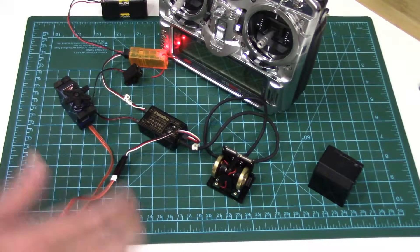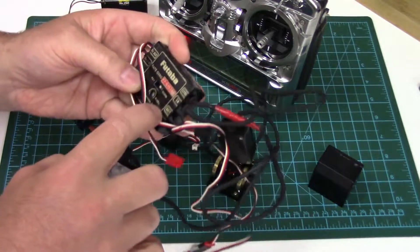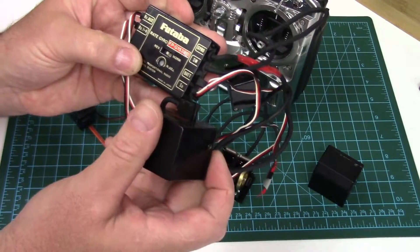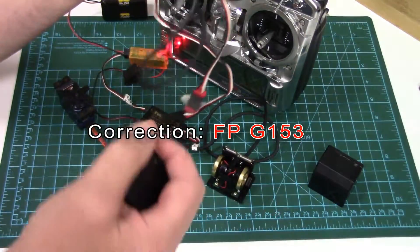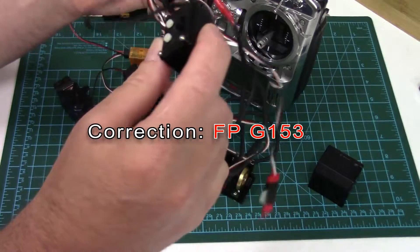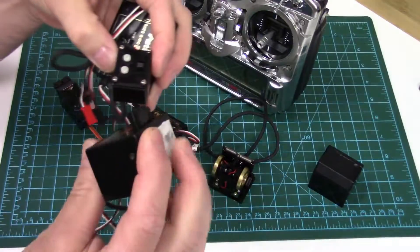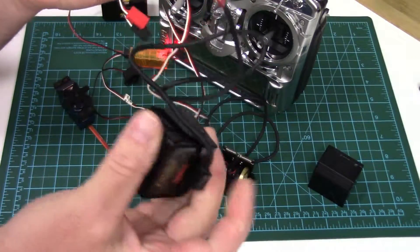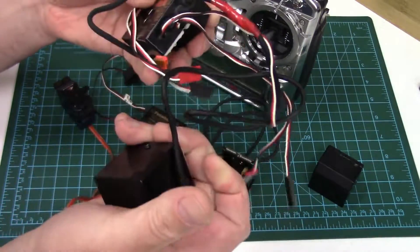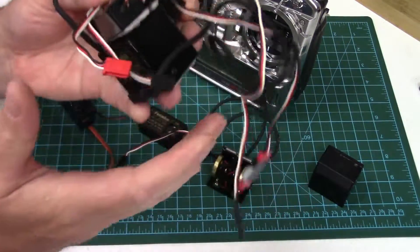Futaba also had a higher end one called the FPG 135 and this one did have remote gain. So more complicated unit, a little heavier. I think this one weighs about 110 to 120 grams total weight.